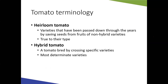Some terminology: heirloom tomatoes are varieties that have been passed down through the years by saving seeds from those fruits. They're typically non-hybrid varieties — you get your fruit, collect the seeds, plant them, and they come back true to form year after year. After 40 to 50 years of this happening, those plants are considered an heirloom.